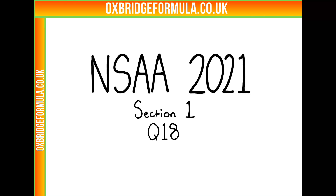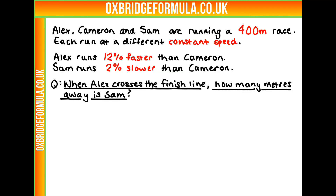This is ANSWER 2021 Section 1 Question 18. Alex, Cameron and Sam are running a 400m race. Each of them runs at a different constant speed. We're told that Alex runs 12% faster than Cameron and that Sam runs 2% slower than Cameron. The question is: when Alex crosses the finish line, how many meters away is Sam?